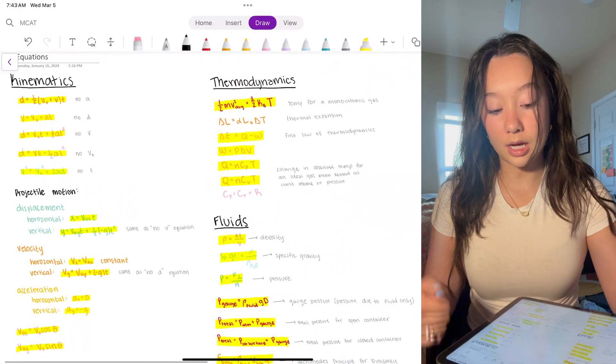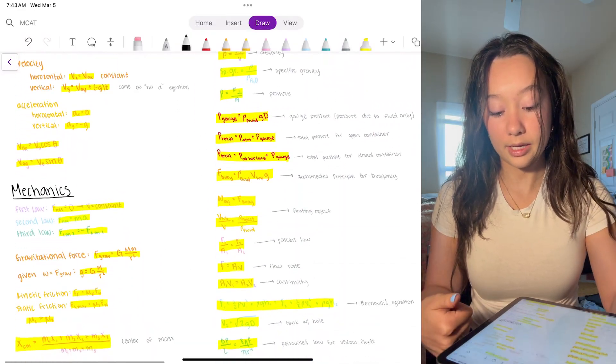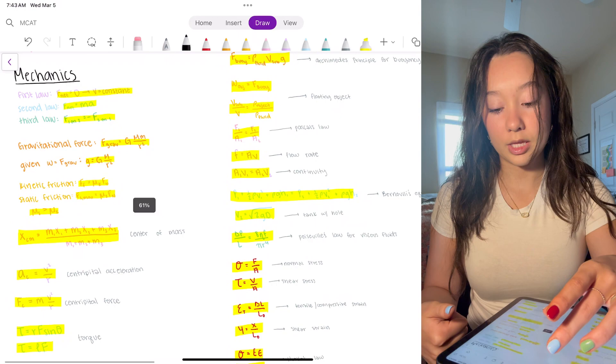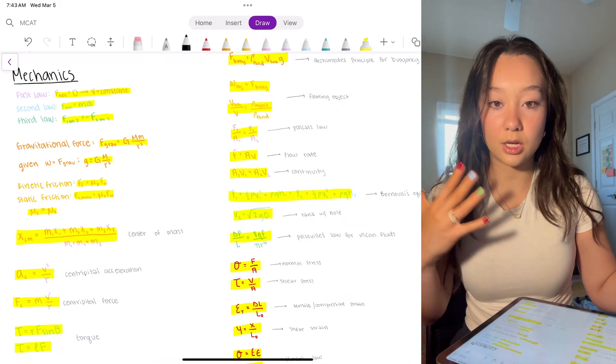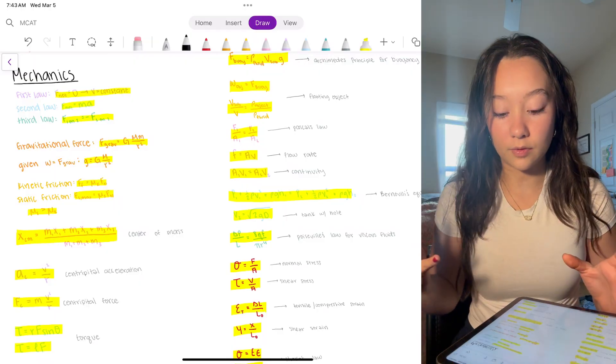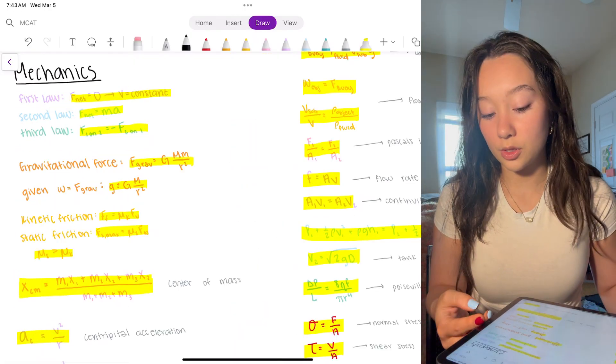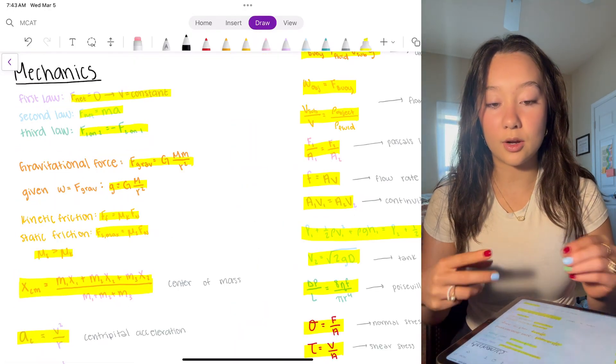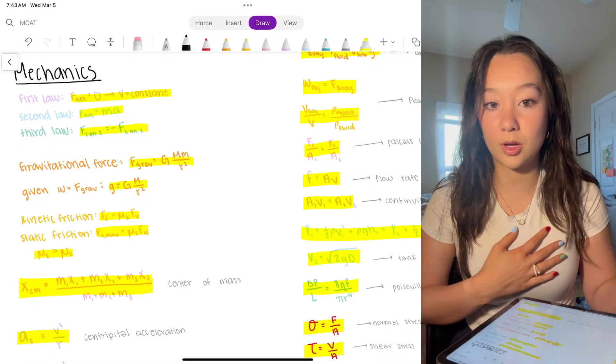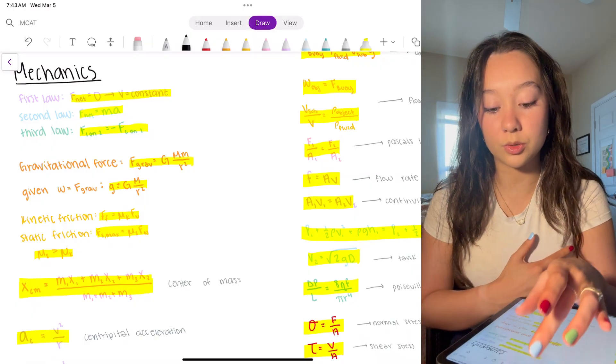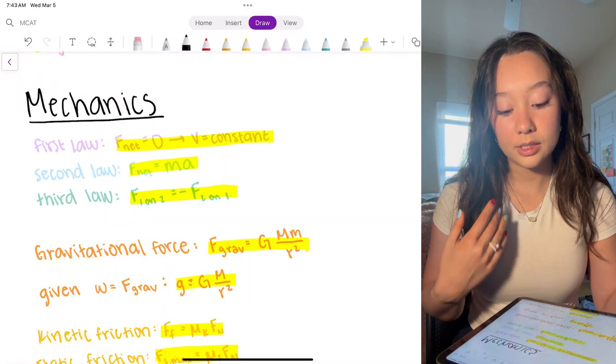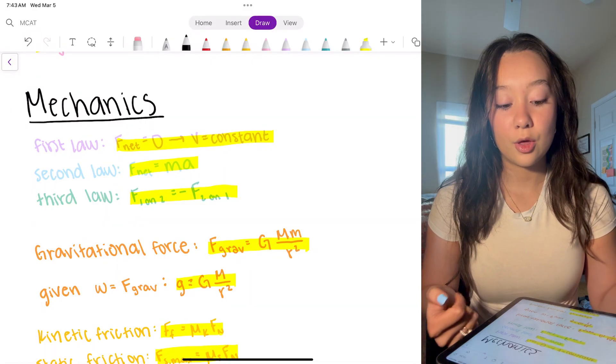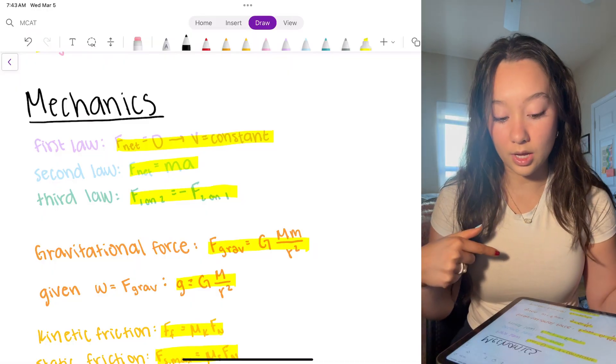So that was kinematics, now we're going to move down to mechanics. And this is going to be everything like gravitational force, atoms, momentum, centripetal acceleration, stuff like that. So these are the first three laws. First law is basically saying that an object at rest will stay at rest unless it's acted upon by an outside source which is basically saying that f net is zero when velocity is constant. Second law, f equals ma. Third law is equal and opposite reactions.